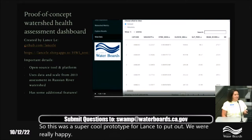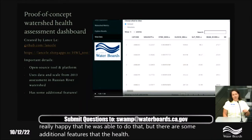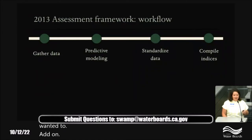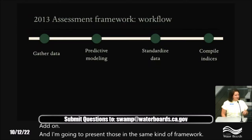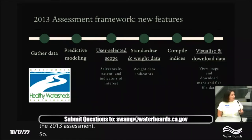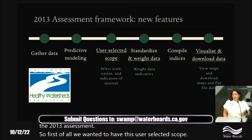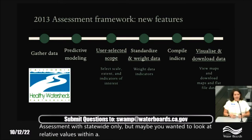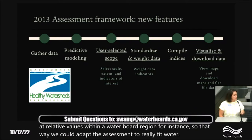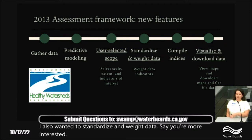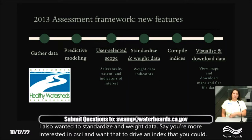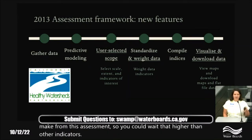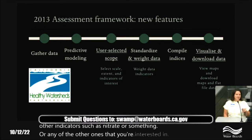That was a great prototype from Lance, but the Healthy Watersheds Partnership wanted to add additional features. These include: user-selected scope — not just reach catchments, but also HUCs and user-defined extents — so not only statewide but potentially within a single water board region. We also wanted the ability to standardize and weight data, for instance weighting CSCI more heavily than other indicators like nitrate. And finally, the ability to visualize and download both the map and the associated data.